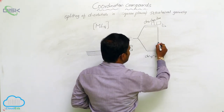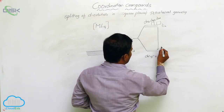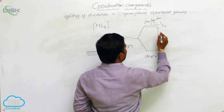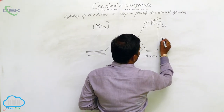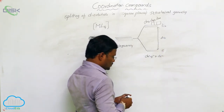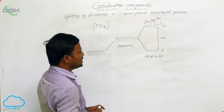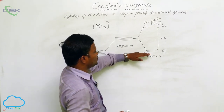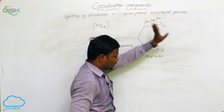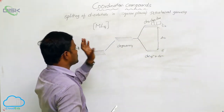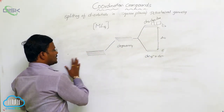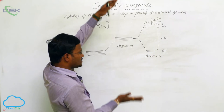The energy difference between the E and T2 levels is represented as delta T — the energy difference between two energy levels in tetrahedral geometry. In the case of strong field ligands, the energy difference is more.